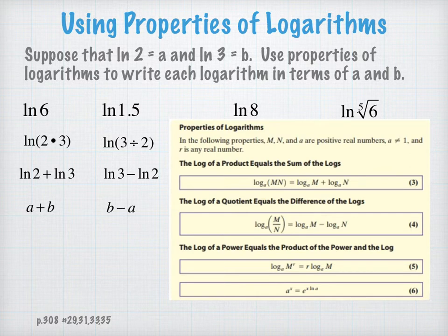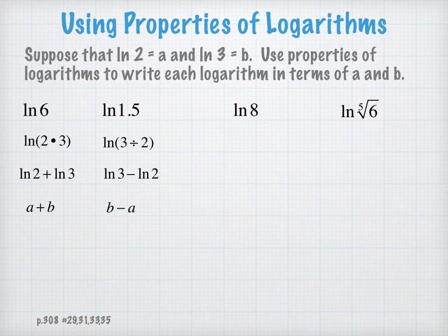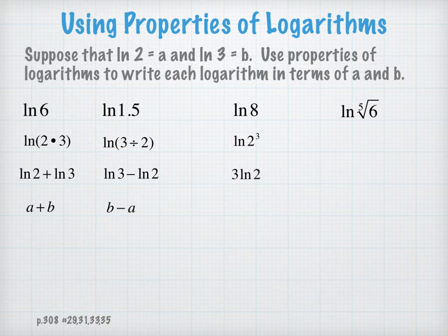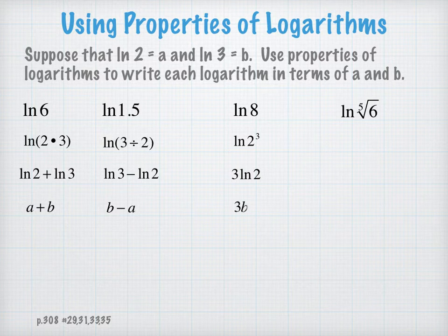To solve the next problem, the natural log of 8, how can I use the numbers 2 and 3 to get 8? I know 2 to the third power is 8. So I will be using that property that the log of a power equals the product of the power and the log. Take a look at the way that property looks, and then we'll apply it. So we're going to represent this problem as the natural log of 2 to the third. And I'll apply that property that I can bring that exponent out front. I know that the natural log of 2 was given as b, so my answer is 3b.